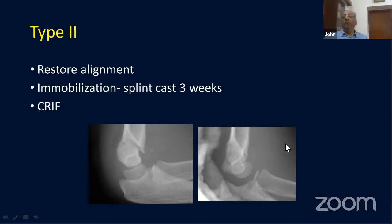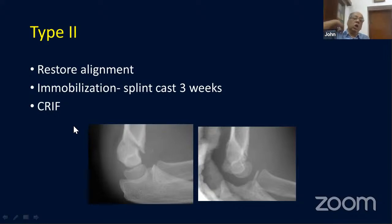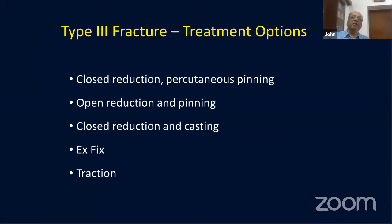The earlier trend for Type 2 was to reduce and flex the elbow to about 110 degrees without fixation, but the trend now is toward closed reduction and pinning because modern techniques allow fixation relatively safely. With K-wires in place, you don't need to flex the elbow as much — you can keep it in a semi-extended position and still maintain reduction.